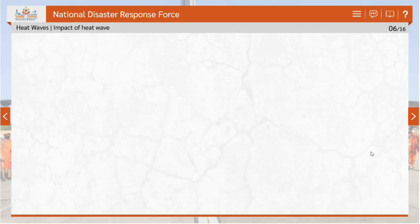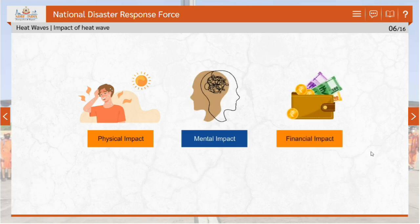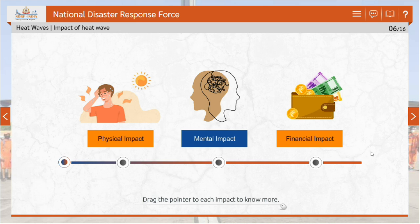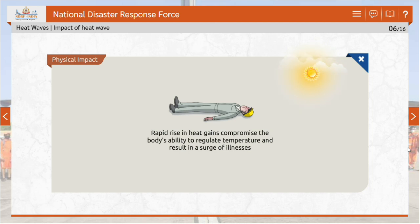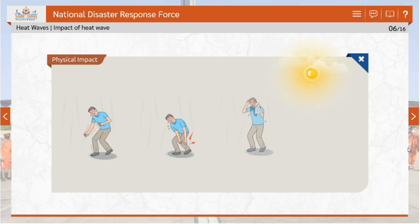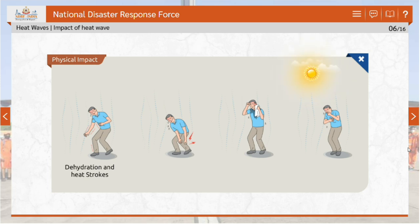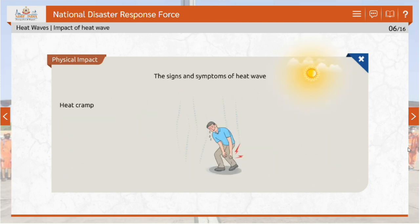Heat waves have a significant impact on physical health, mental health and financial aspects. Extreme temperature events have profound, even fatal, impacts on human health. Rapid rise in heat gains due to exposure to hotter-than-average conditions compromises the body's ability to regulate temperature and can result in a surge of illnesses including dehydration, heat strokes, heat cramps, heat exhaustion, and cardiovascular and respiratory disorders. Symptoms: edema or swelling and syncope or fainting generally accompanied by fever below 39 degrees Celsius (102 degrees Fahrenheit) are symptoms of heat cramps.